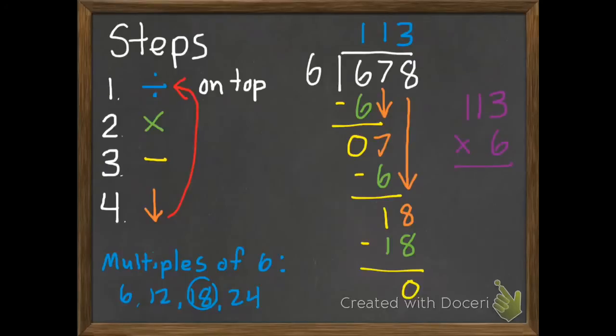I am going to check my work, though. So 113 times 6. Once again, that 113 comes from our answer, our quotient. And the 6 is our divisor. So 3 times 6 is 18. Carry my 1. 6 times 1 is 6 plus that 1 is 7. And then 6 times 1 is 6. So 678, which is exactly what we started with. So we know we got this right.